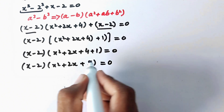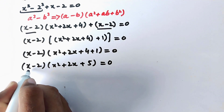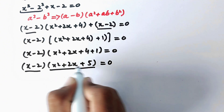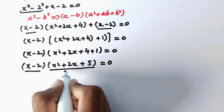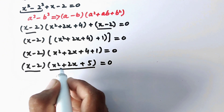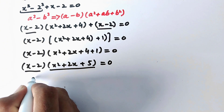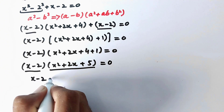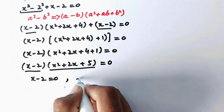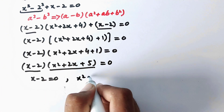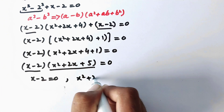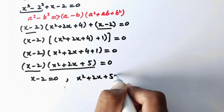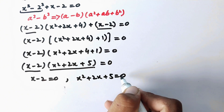Now we can see there are two factors equal to zero, giving us two equations: x minus 2 equal to 0, and x squared plus 2x plus 5 equal to 0.